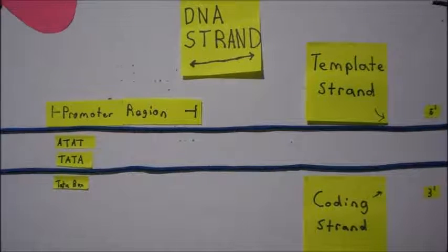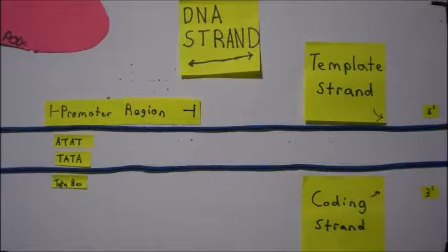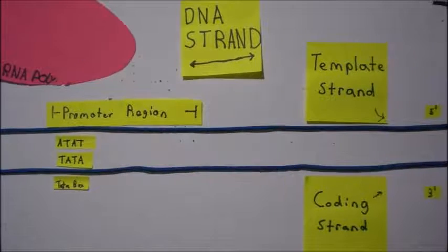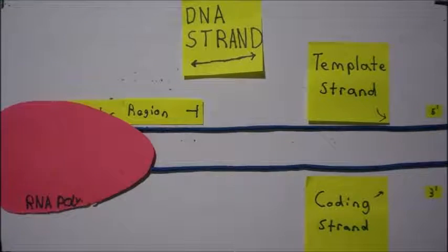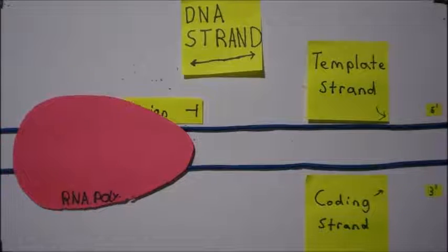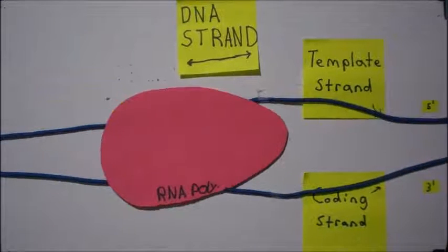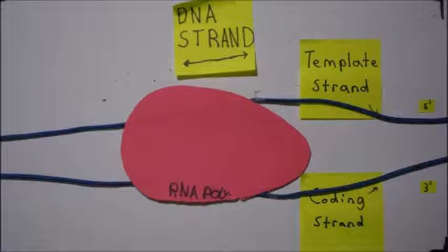This is the promoter region, where the enzyme RNA polymerase is able to bind. More specifically, it contains a TATA box consisting of a sequence of nucleotides that allow RNA polymerase to bind. RNA polymerase binds to the promoter region and begins to unzip the DNA at its starting point.